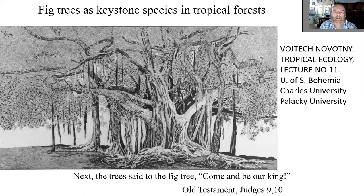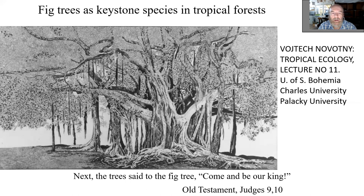Today we have a fairly specialized topic: fig trees as keystone species in tropical forests. Why jump from very general topics to something which in ecological textbooks has maybe one or two pages at maximum? I am trying to show that when you pick up any topic in ecology and go deep enough, there are layers and layers of additional complexities and interest, so you basically can never end digging to the bottom of it.